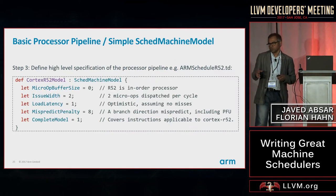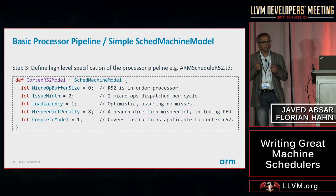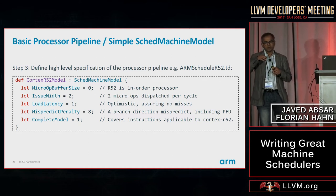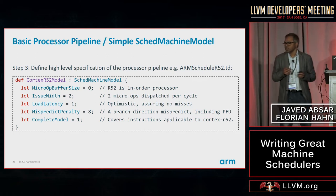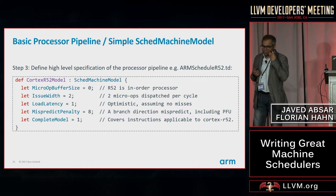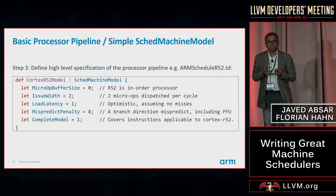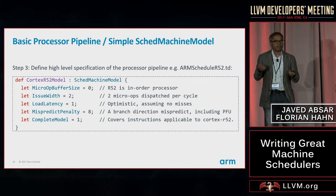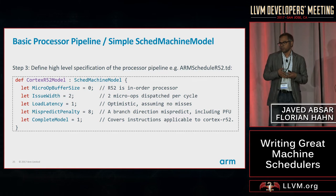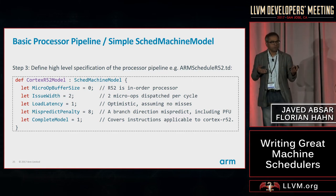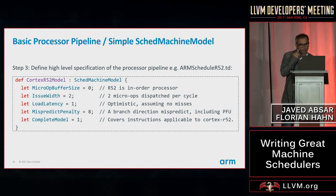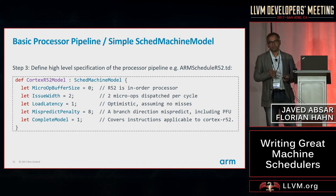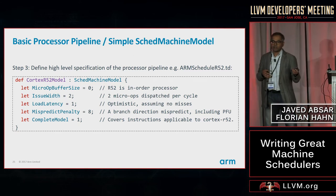The first thing you do at the processor level is define top-level pipeline features: the MicroOpBufferSize, also known as reorder buffer size. If it's zero, that means it's an in-order processor with no reorder buffer. For an out-of-order processor you put its reorder buffer size there. IssueWidth is self-explanatory — for this example, Cortex-R52 is dual issue. Other parameters are used by parts of the backend beyond the machine scheduler.